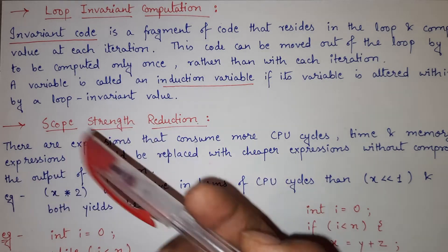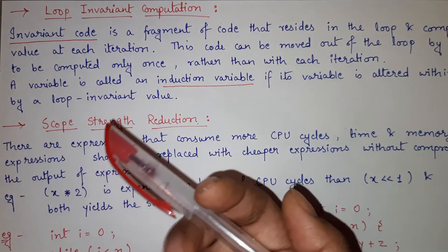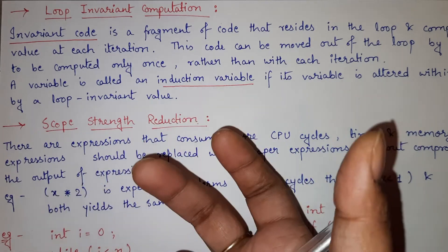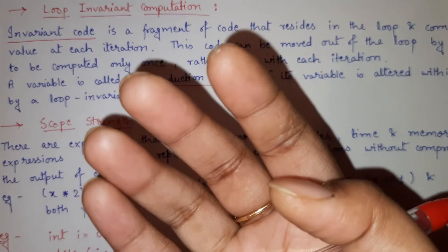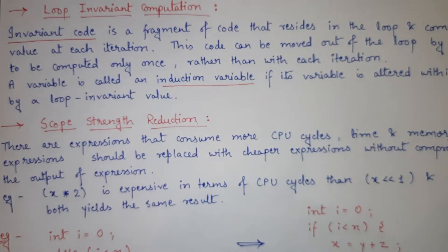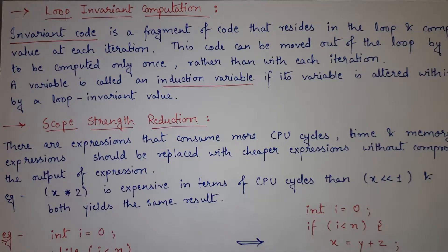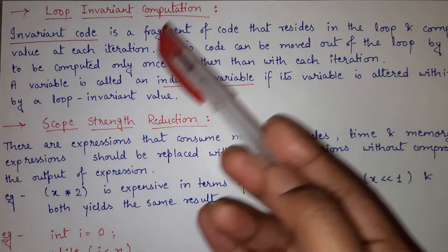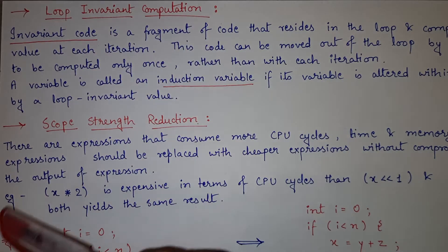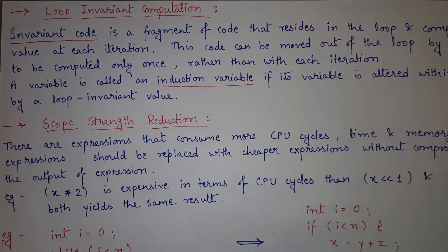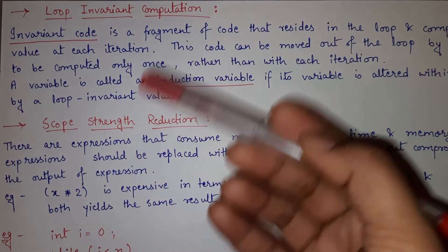I will tell you the examples, I will tell you the definition, we will learn the concepts — how they are used and why they are used. These two topics come under code optimization. Whenever you want to optimize your code, we can use loop invariant computation or scope strength reduction. With the help of different examples, we will get a clear idea in this video about what these two are.